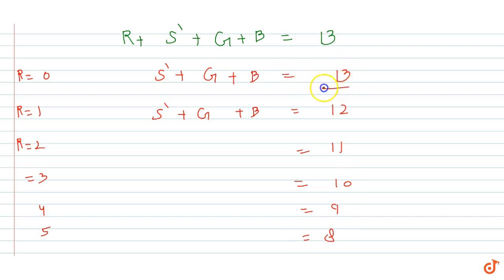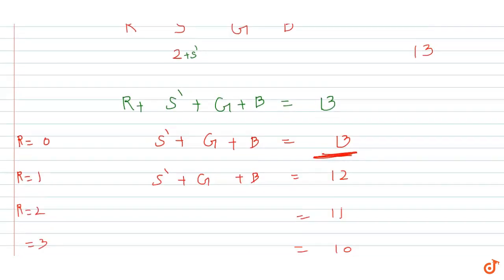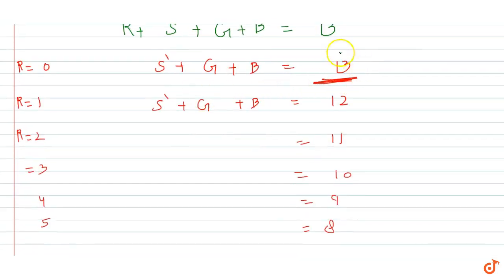For each case, we have 13 identical candy bars distributed among S dash, Ghan Shyam and Balram. There's no additional condition, so we distribute 13 identical things among 3 different people. The formula for n identical things among r people is n plus r minus 1 choose r minus 1. So we get 13 plus 3 minus 1 which is 15C2.